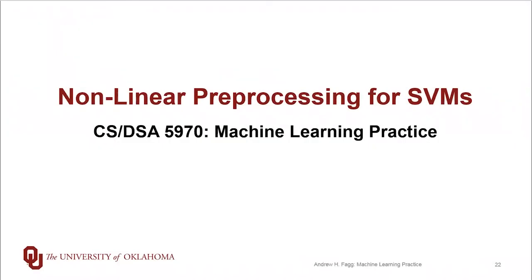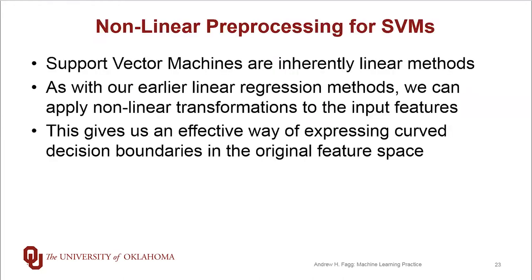So far, we've stuck with the linear versions of support vector machines, and now it's time to take that next step. These SVMs are actually linear methods, but as we've talked about with other linear regression methods, we can actually turn them into nonlinear methods by doing a little bit of nonlinear preprocessing of the input features before taking the step into the linear method. What this gives us is the ability to express nonlinearities while also keeping all of the nice features of our linear tools.